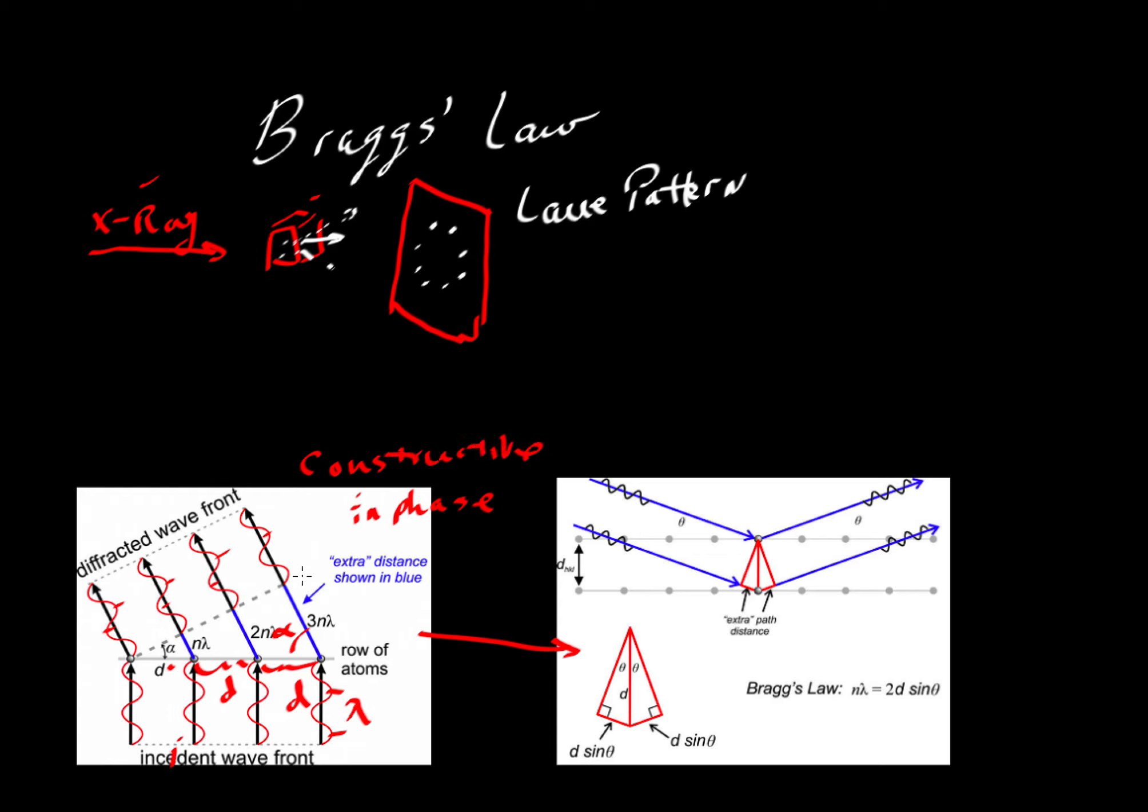And if we have constructive interference we can add up the energies of all of these. And if we set up a detector here with the sum of all those energies would give us a wave with the same wavelength but a much larger amplitude for the peaks and troughs. And so the detector over here would record a large burst of energy that would represent these white dots over here.